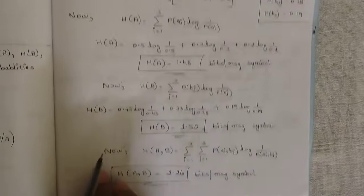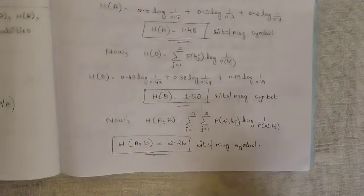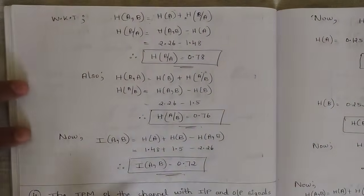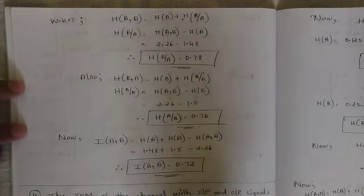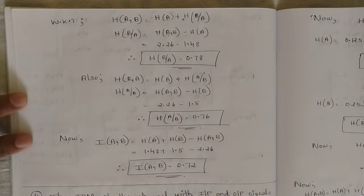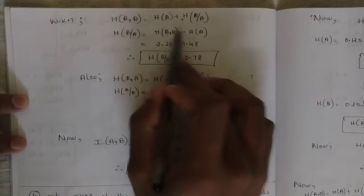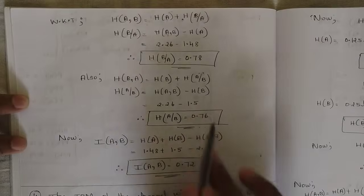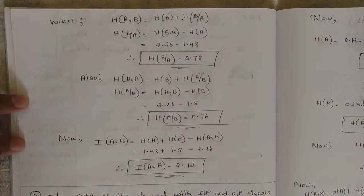For H(A,B), take all the joint probability values — 0.4, 0.1, etc. — apply the logarithmic function to each and sum them; the answer is 2.26 bits per message symbol. Using the relation H(A,B) = H(A) + H(B|A), bring H(B|A) to the other side: H(B|A) = H(A,B) − H(A) = 0.78. Similarly H(A|B) = 0.76. The mutual information I(A,B) = H(A) + H(B) − H(A,B) = 0.72.